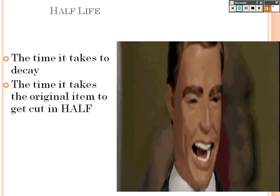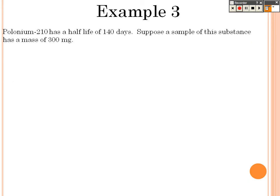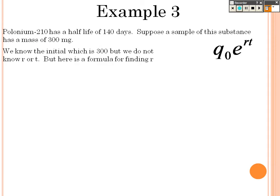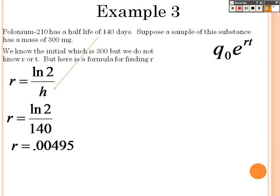We went over half-life already. It's the time that it takes for things to cut in half, so it's decaying. Half-life is 140 days. Suppose a sample of this substance has a mass of 300 milligrams. We know the initial is 300, but we don't know r or t. But here's a formula for finding that. Here's how you can find r when you're talking about half-life: it's the natural log of 2 over h. So h is the half-life of 140. So the rate is the natural log of 2 divided by 140. This is a common formula for you to remember. Natural log of 2 over 140, which is about 0.004 for r.